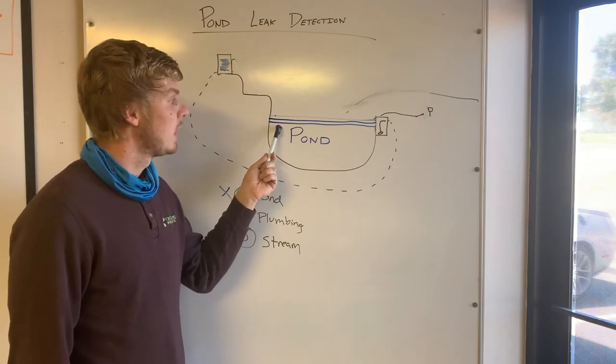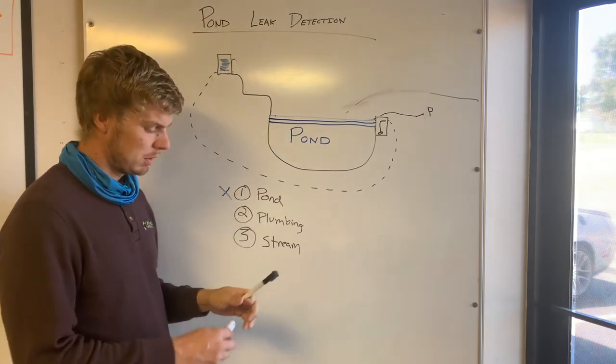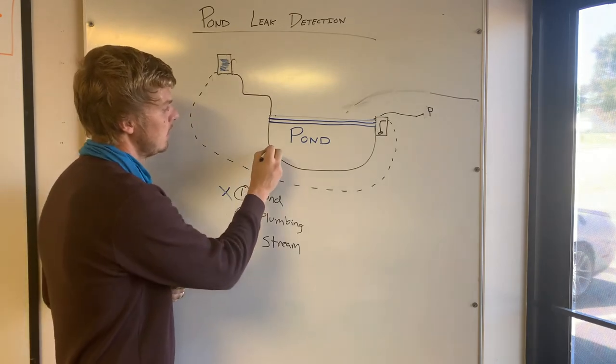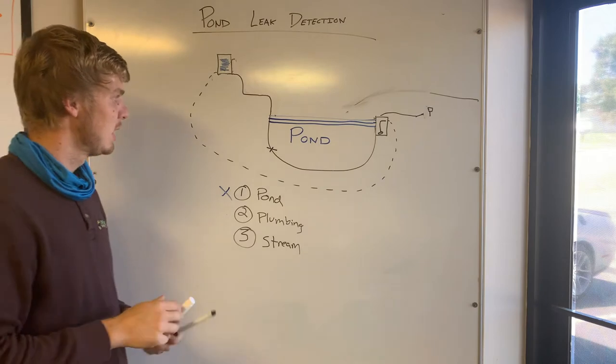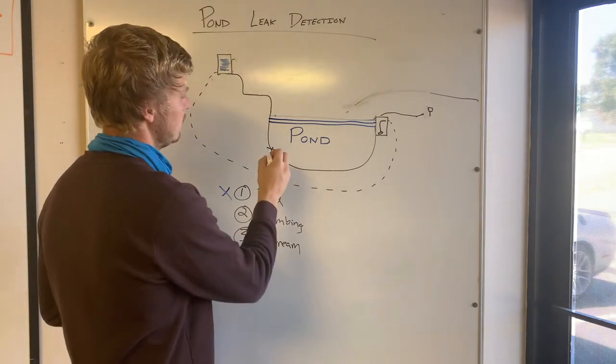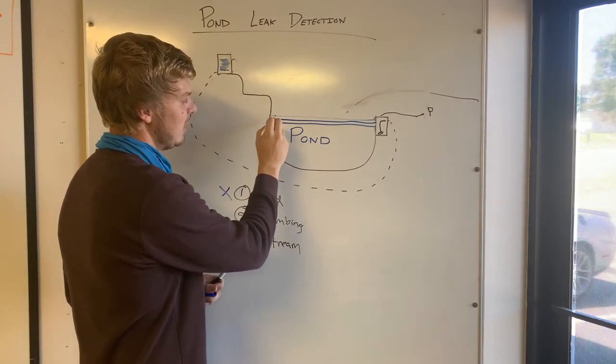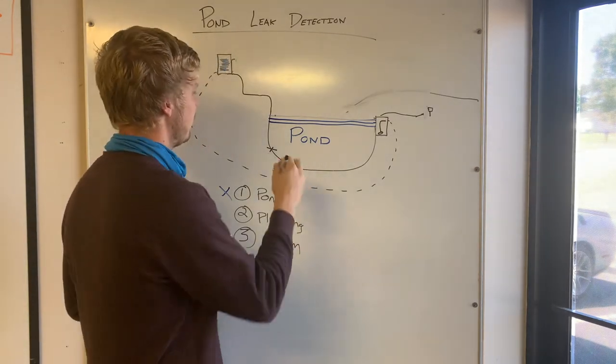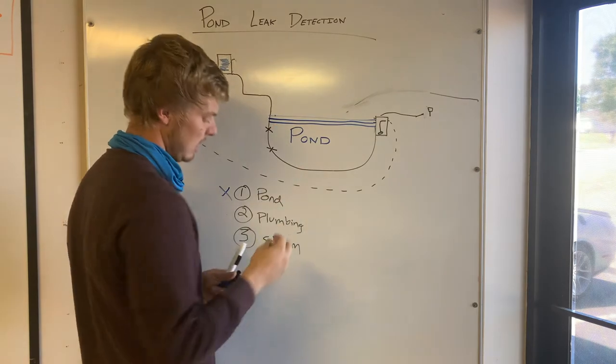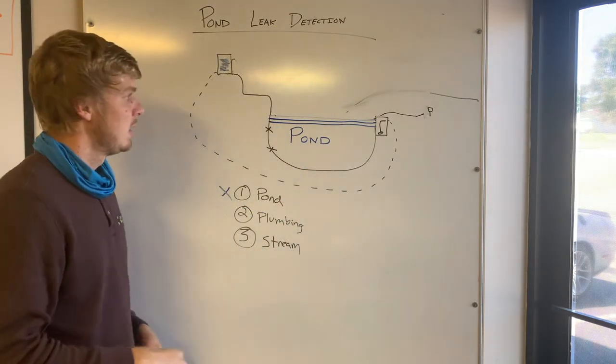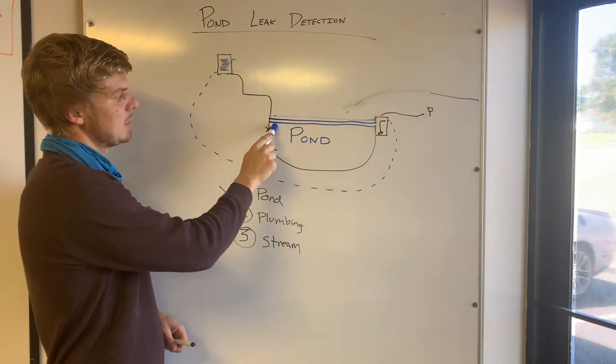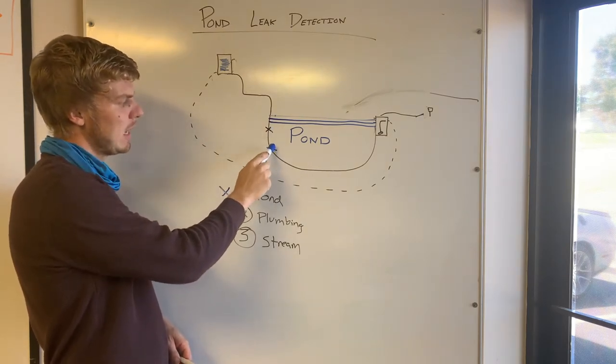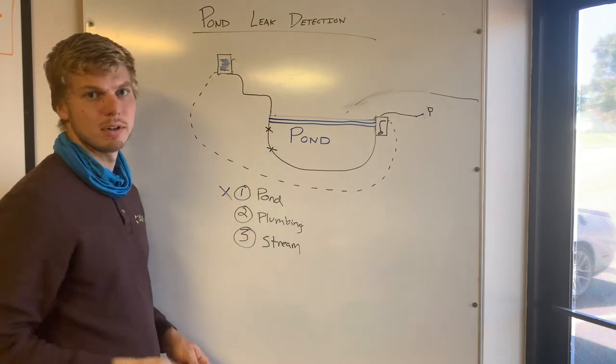But this process of the pond level going down, waiting 24 hours, can drag out and take a long time. So it's important to know that if your leak, say you have a hole in the liner right here close to the bottom, it's going to take a while for the water to drain all the way down there. Say you have two leaks, it's going to be going down faster and then it's going to get to this one, it's still going to start going down or keep going down because of this hole but it might go slower.